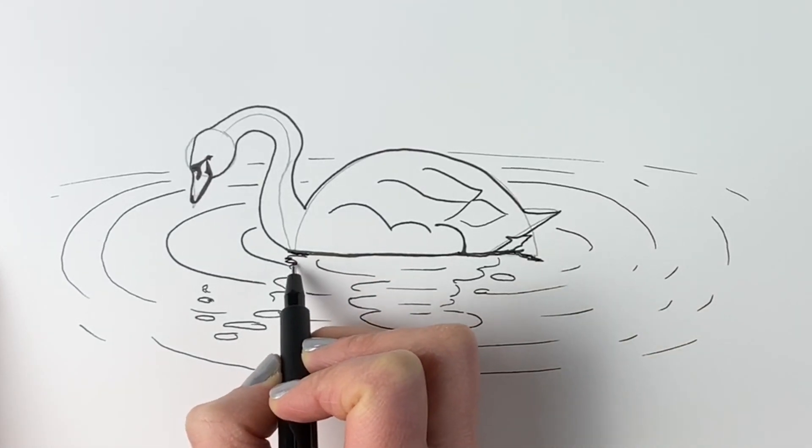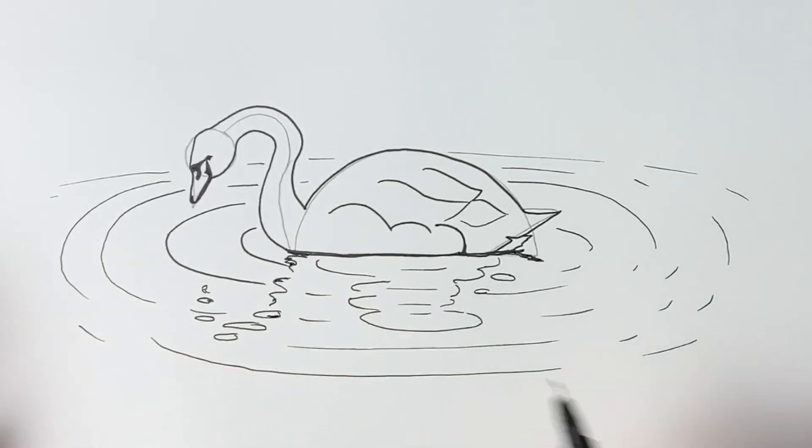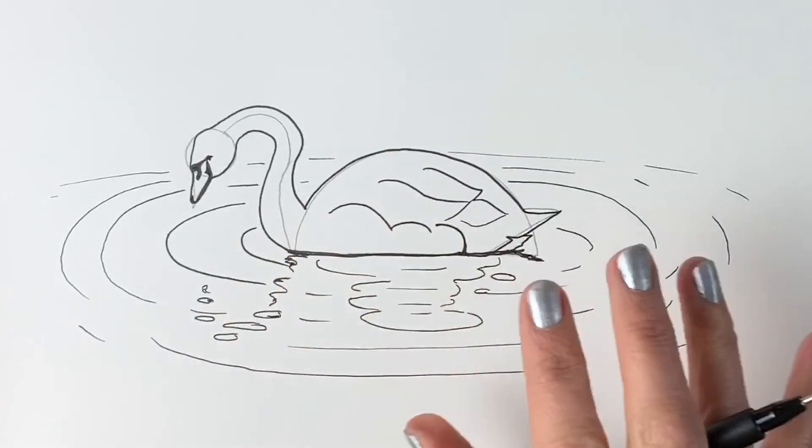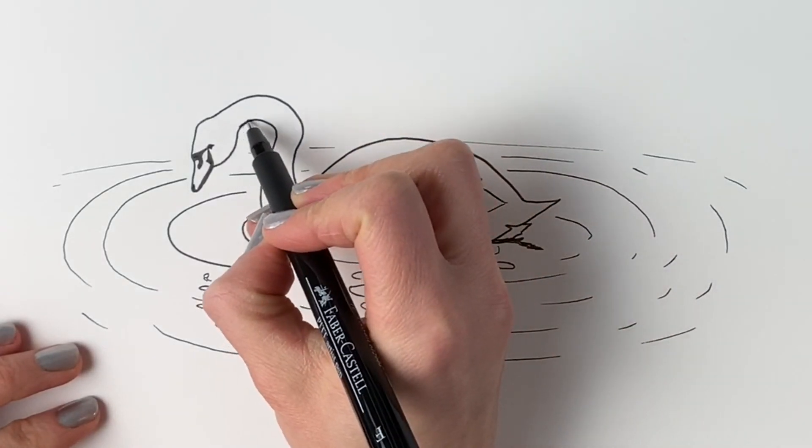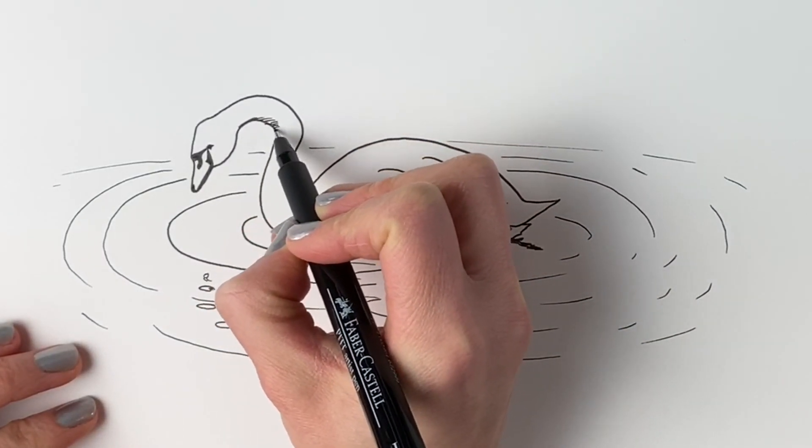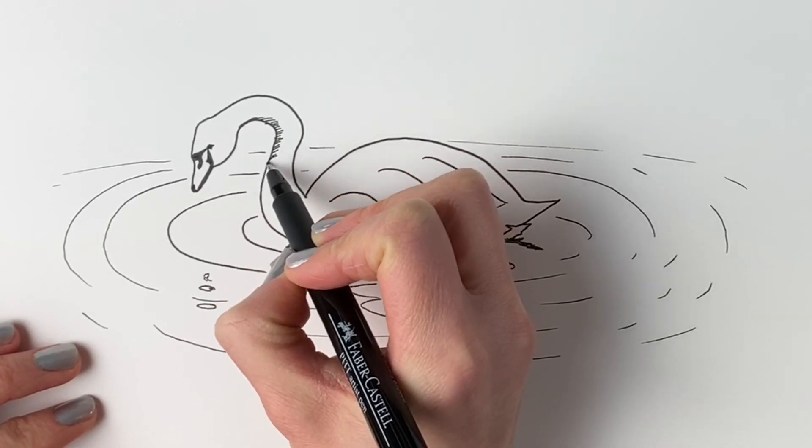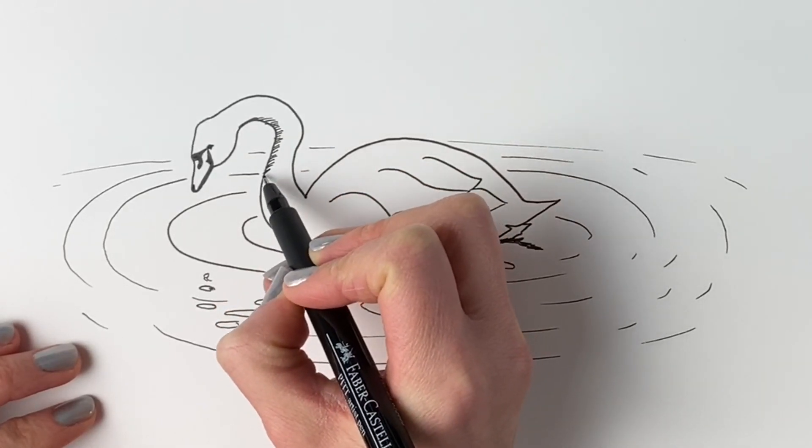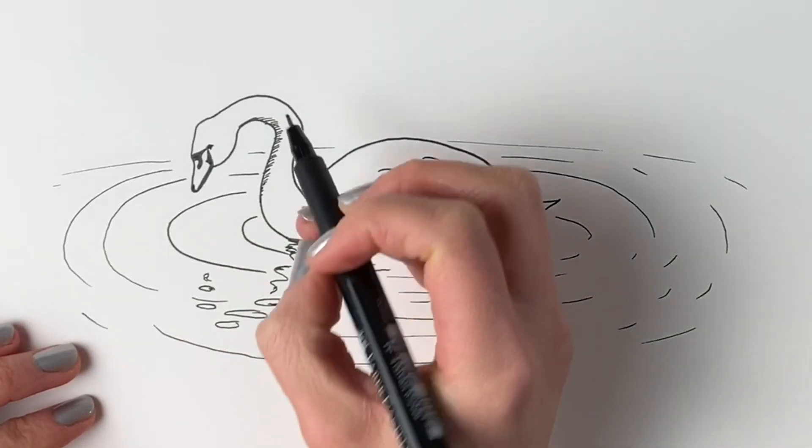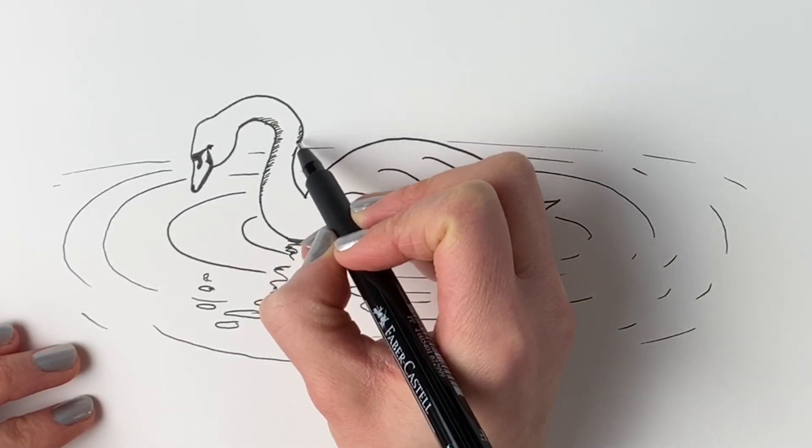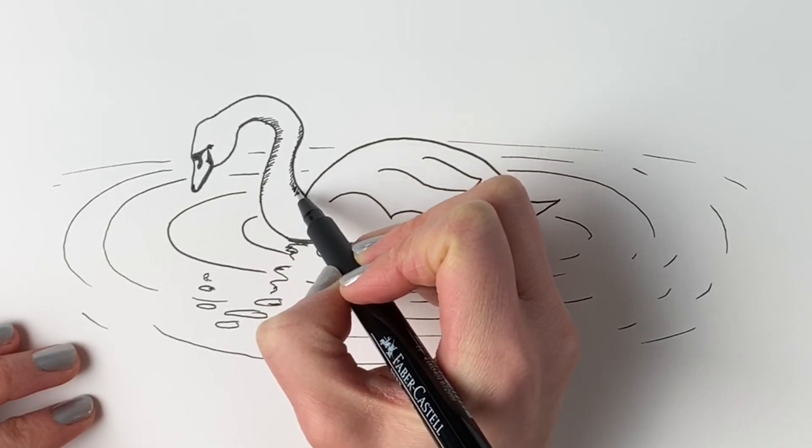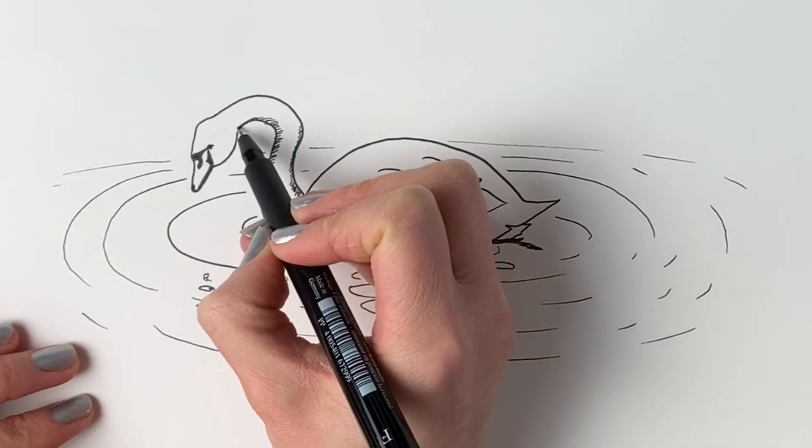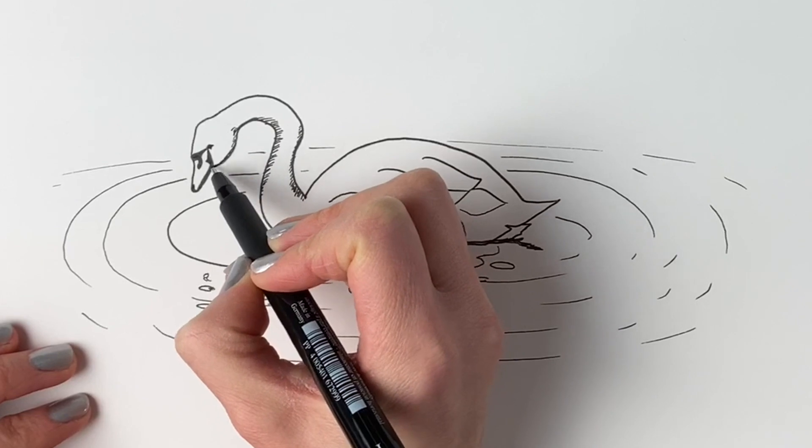Now I'm going to erase all the pencil lines, but if you haven't done it in pen yet, go over it all in pen then erase the pencil lines. So I've erased all the pencil lines now and I'm just going to add some shadow just on the underside of the neck, just under here. I'm doing that by drawing lots of little lines all in the same direction. Make sure they're all in the same direction, just like that. Now a few on this side, again all in the same direction till you get to here, and then on the underside here.